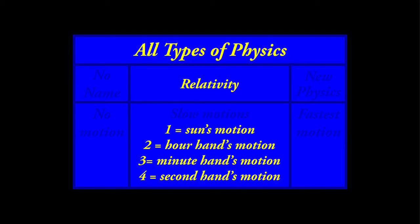In our frame, these three motions are labeled 2, 3, and 4. Number 1 represents the sun's motion; number 2 the hour hand; number 3 the minute hand; and number 4 the second hand. Throughout history, all of these motions have been used as our standard for time — all of them have been used to measure other motions, and all four have been called time. Keep in mind, all of these motions are slow, and that is bad. None of them move as fast as the speed of light.